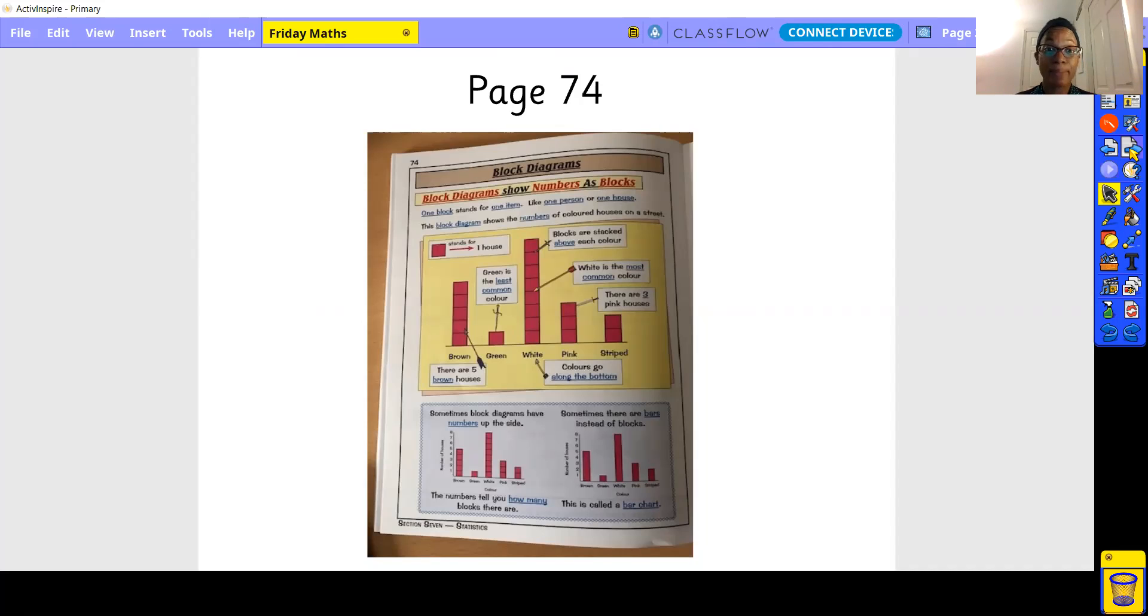Block diagrams show numbers as blocks. One block stands for one item, like one person or one house. This block diagram, for example, we can see here on page 74, you can see each block stands for one house in this example.